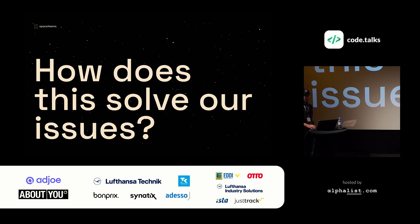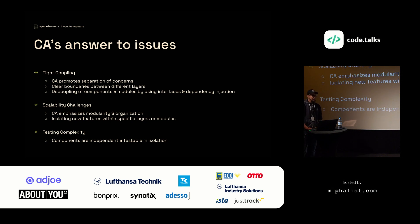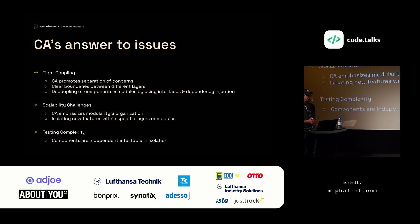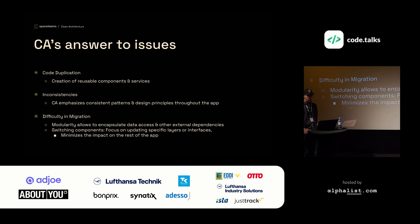Now, how does an architectural pattern like this help us avoid these issues? Clean architecture promotes a clear separation of concerns. We have clear boundaries between our different layers, and this helps us avoid tight coupling because we can decouple components and modules using interfaces and dependency injection. Clean architecture also emphasizes modularity and according organization, so we can develop new features within a specific layer and avoid scalability challenges. We can also test our components independently and in isolation. This pattern emphasizes the creation of reusable components and services, which helps avoid code duplications, and consistent patterns throughout the whole application, so we don't see any inconsistencies.